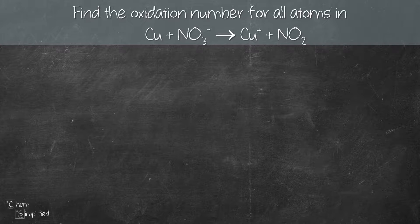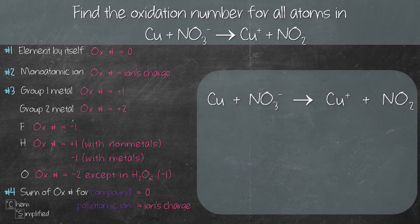Let's find the oxidation number for all the atoms in this given equation. Here are the four rules that will help us get the job done. Let's look at rule number one.